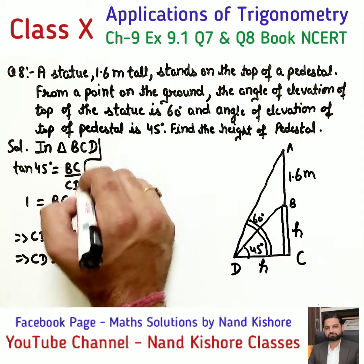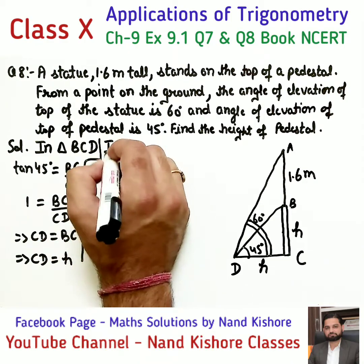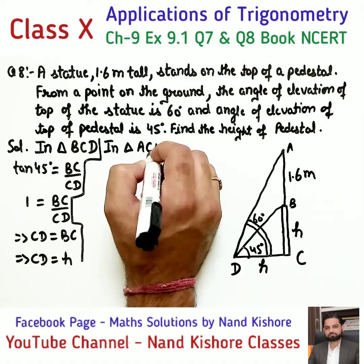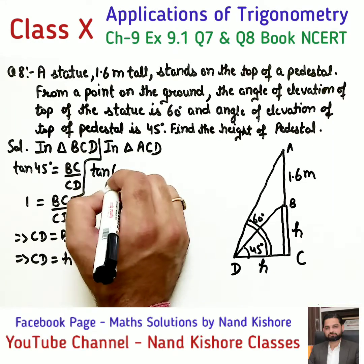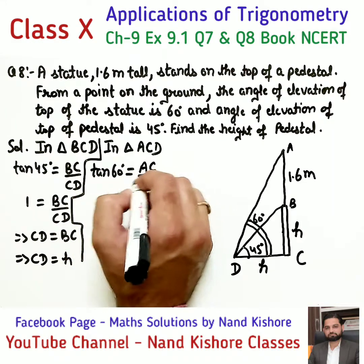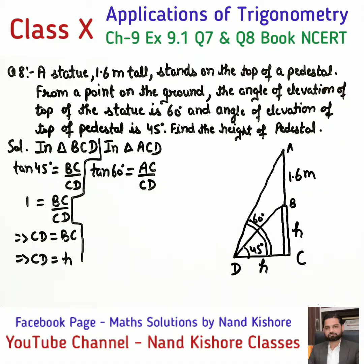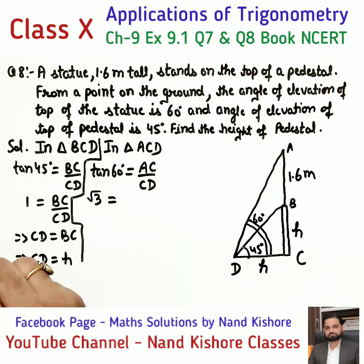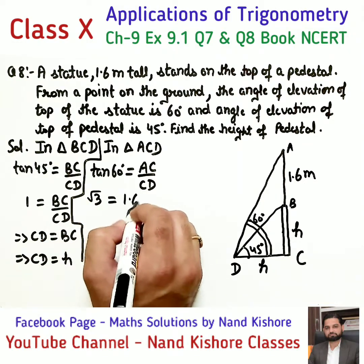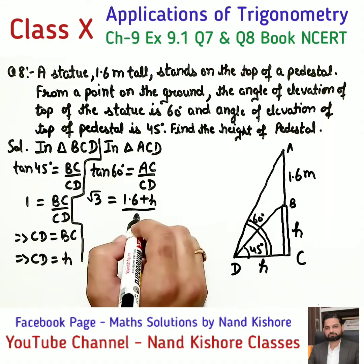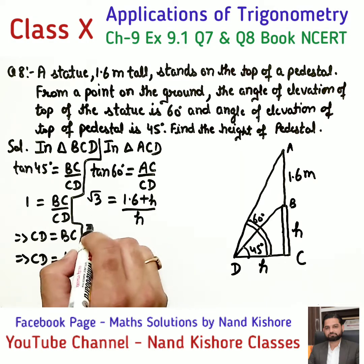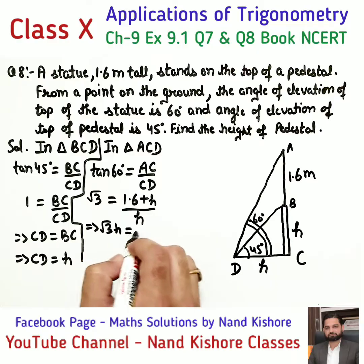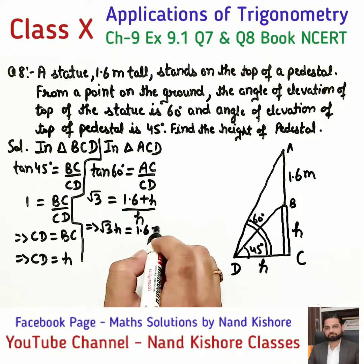Now let's go to the larger triangle ACD. In triangle ACD, we use tangent 60 degrees, which equals AC upon CD. Tangent 60 is root 3. AC equals 1.6 plus H, and CD equals H. Cross multiplying: root 3 times H equals 1.6 plus H.